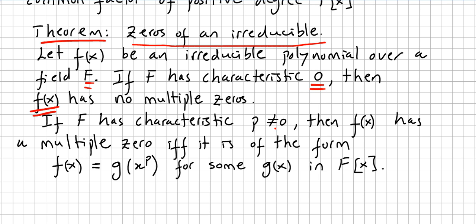If F has characteristic p not zero, then f(x) has a multiple zero if and only if it is in the form f(x) = g(x^p) for some g(x) in F[x].